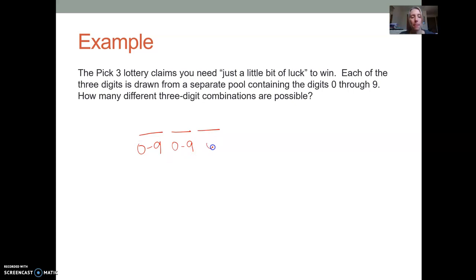So it says each one is zero through nine. So this one is zero through nine. This one is zero through nine. And this one is zero through nine. Well, zero through nine, that's 10 total. So there's 10 options for the first number. And there's 10 options for the second number. And there's 10 options for the third number. And the counting principle tells us we need to multiply these. When we multiply these, we end up with 1000. There are 1000 different combinations to win the pick three. I'd say you need more than just a little bit of luck.